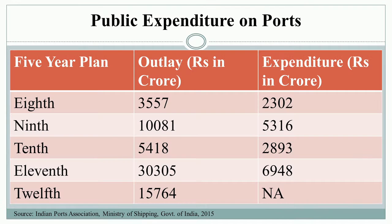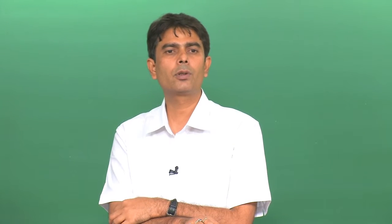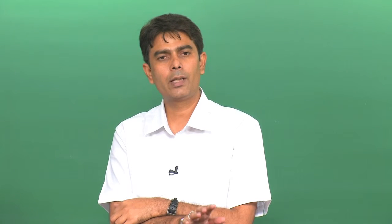There are currently 12 major ports in India. In terms of public expenditure, the 8th Plan had an outlay of 3,556 crores with actual expenditure of 2,302 crores. In the 9th Plan, expenditure was around 5,316 crores; in the 10th Plan, 2,893 crores; in the 11th Plan, 6,948 crores; and in the 12th Plan, 15,764 crores was allotted for port development. Traffic handled by major ports increased from around 200 million tonnes to 581 million tonnes, while minor ports increased from 18 to 471 million tonnes.